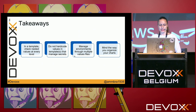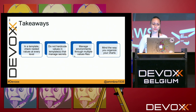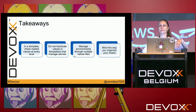Some takeaways: always check for nested values at every level in a template. Do not hard-code values in templates that manage secrets. Manage your environments using multiple values files — I had `values.dev.yaml` but you can have as many as needed. And mind the way you organize your charts based on the number of microservices you have.